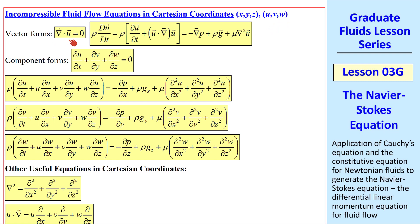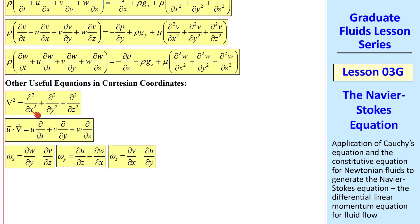These are the vector forms of conservation of mass and the Navier-Stokes equation, and in Cartesian coordinates we get this for the continuity equation, and the Navier-Stokes equation has three components, one for u, one for v, and one for w. I also give some other useful equations, like the Laplacian, the u dot del term, and the vorticity components.